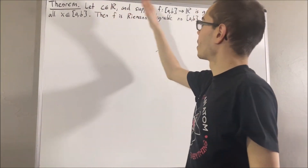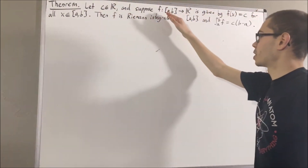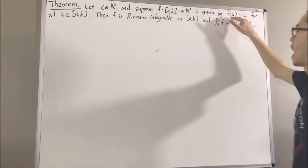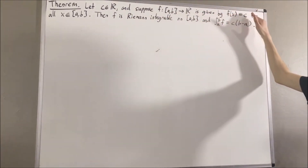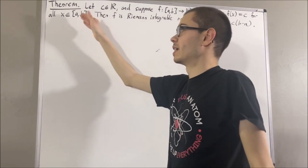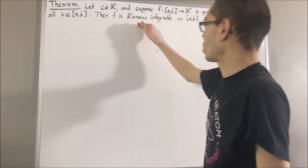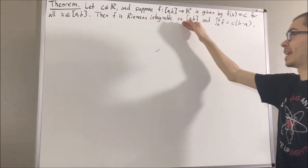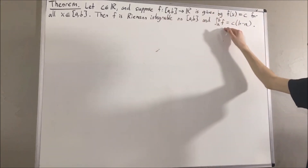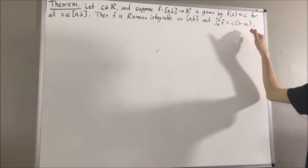Let c be a real number, and suppose f is a function from [a, b] to ℝ, given by f(x) = c for all real numbers x in [a, b]. Then f is Riemann integrable on [a, b], and the integral from a to b of f is equal to c times (b minus a).